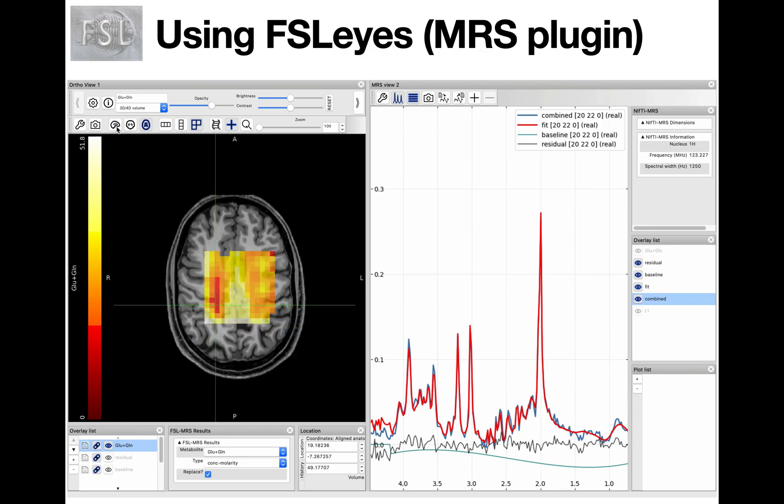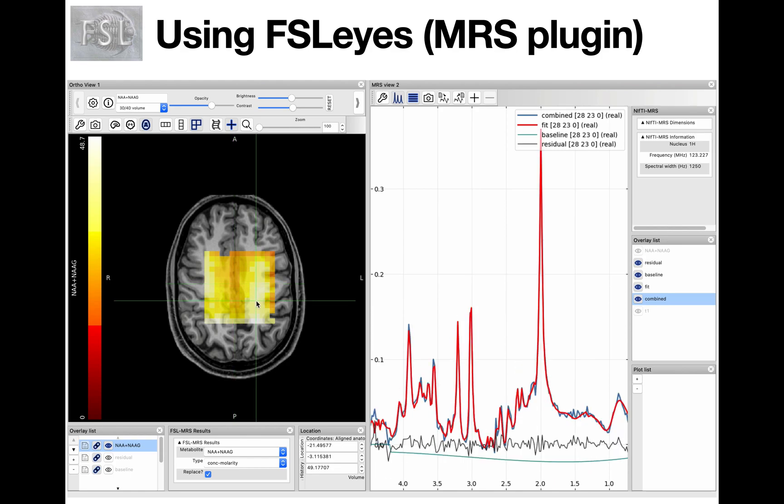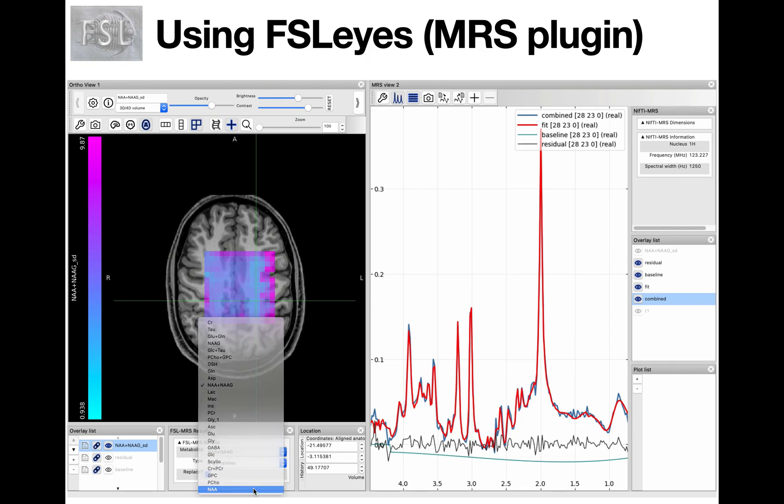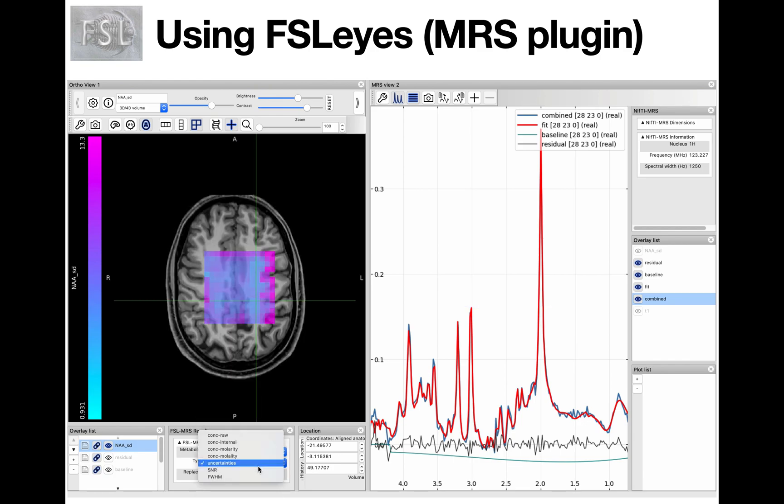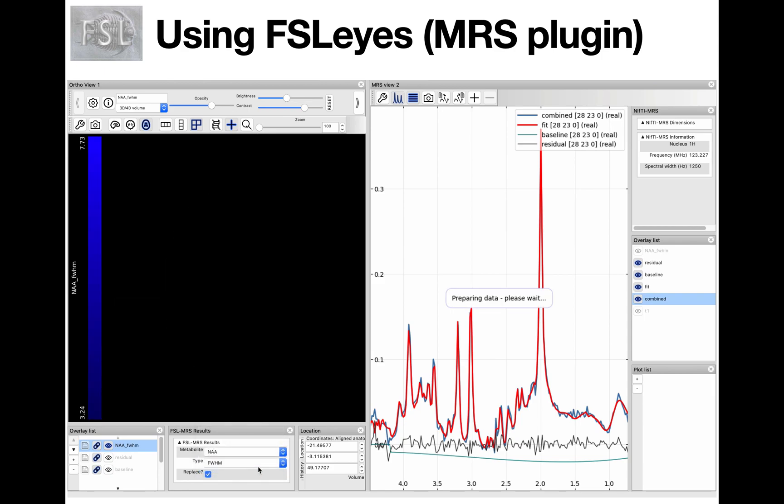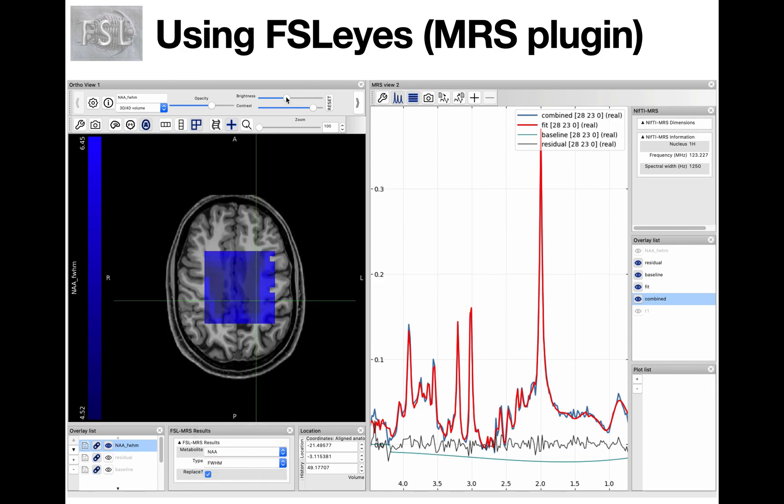When using MRS imaging, a useful way to look at the data and the output of the fitting is by using FSLeyes which has an MRS plugin. In there you can navigate through voxels, checking both the fitting and the concentration parameters, the uncertainties. All the estimated parameters are stored as maps that can be visualized and can navigate through in FSLeyes.